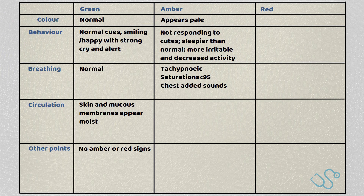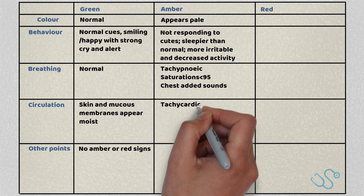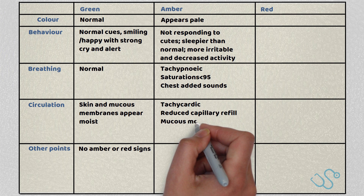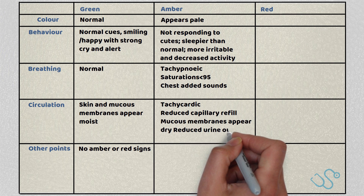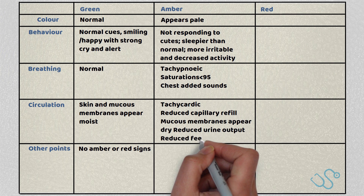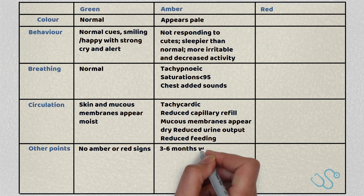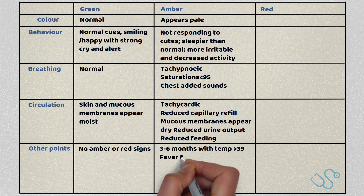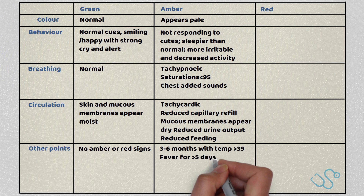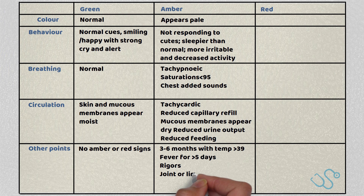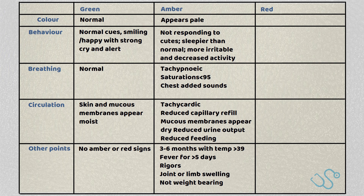In terms of circulation, they might be tachycardic, have reduced capillary refill, mucous membranes may appear quite dry, and they may not have much urine output and reduced feeding. Other amber points include a child between 3–6 months with a temperature above 39 degrees, or a fever above 5 days. Children in rigors, or with joint or limb swelling, or if they're unable to weight bear, are also amber signs.